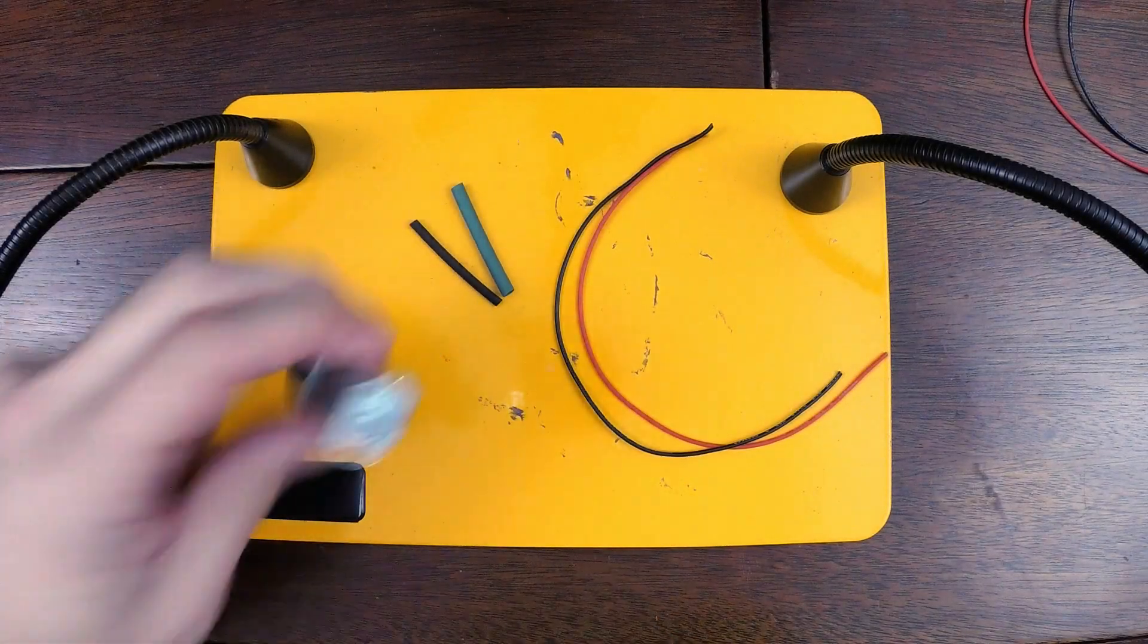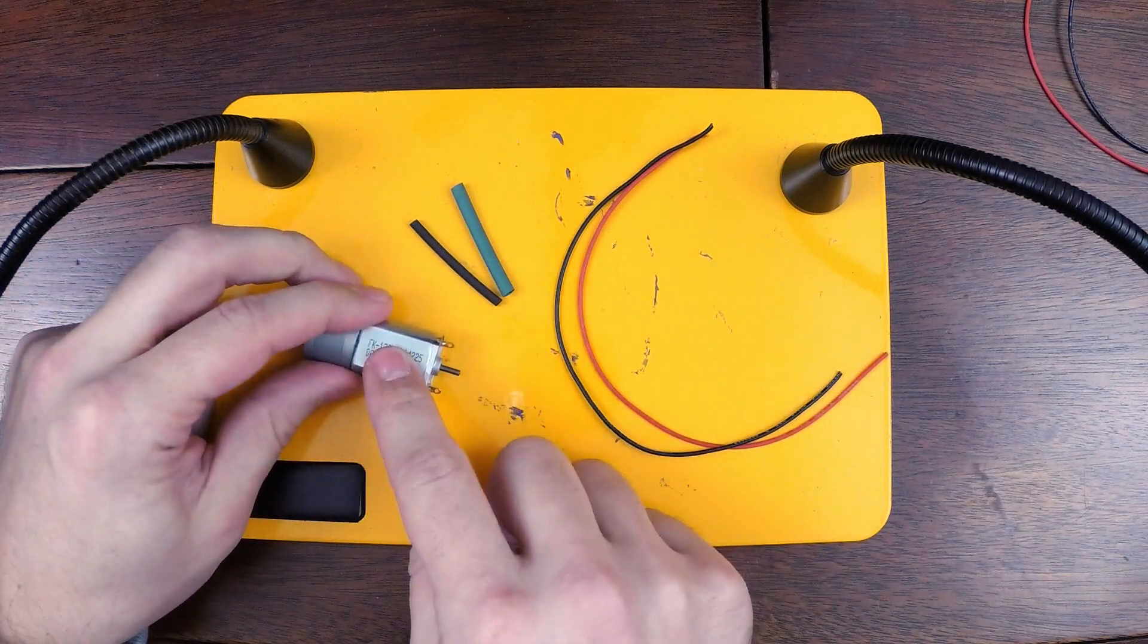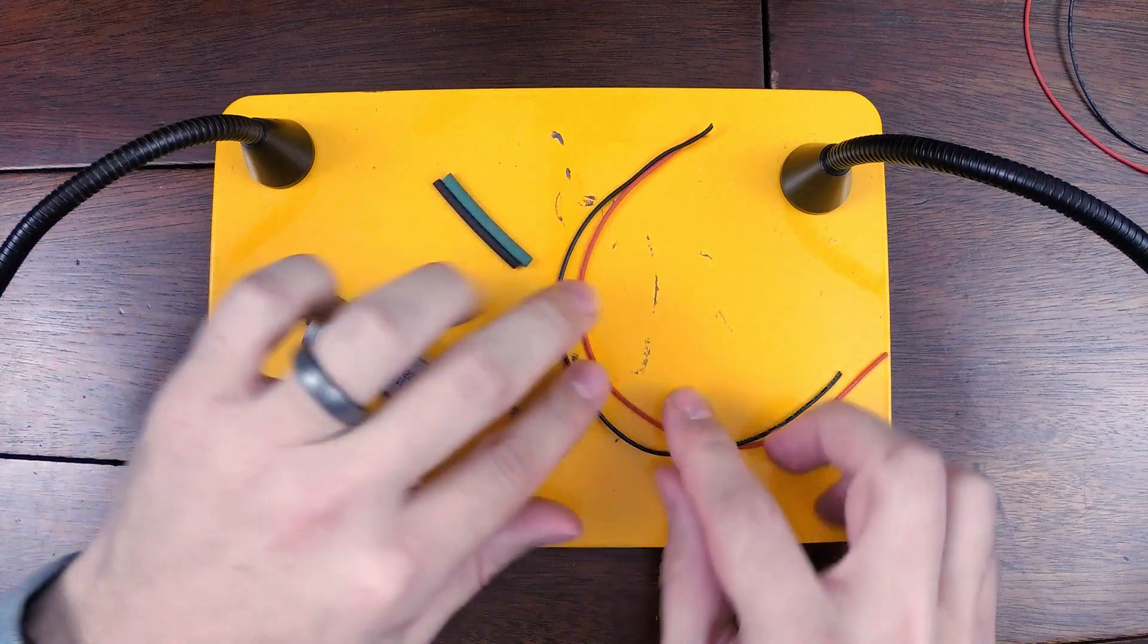Today I'm going to be going over how to properly attach wires to a DC motor. So we have a motor here, some heat shrink tubing, and two wires.